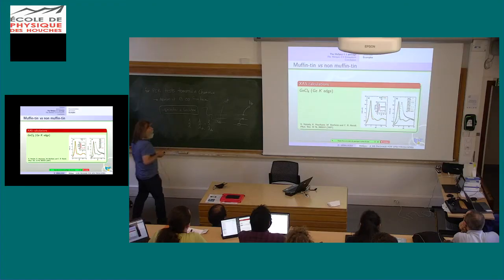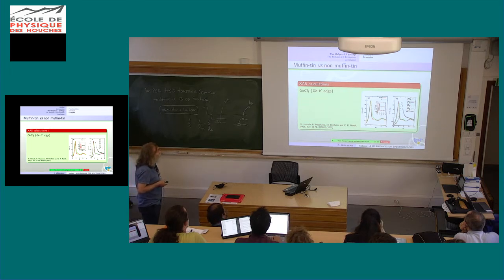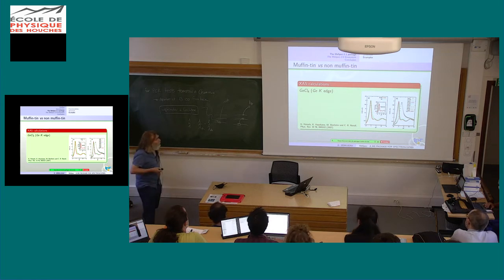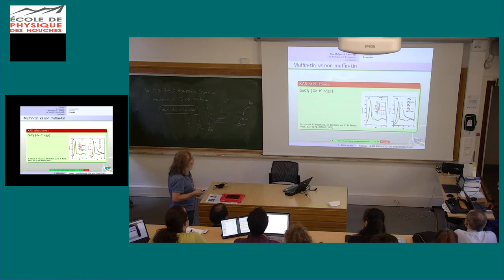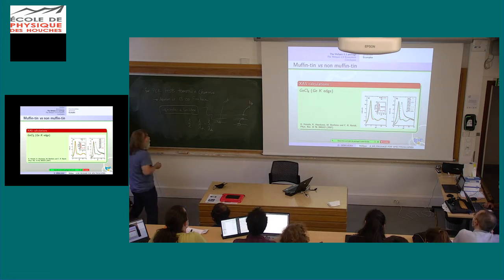Now I come to full potential photoelectron diffraction. It's not implemented in the standard code but it's available if you are interested. So far there have been two or three calculations done. Coming back to results shown by Keiske Hatada — on the K-edge X-ray absorption K-edge of GeCl4. As he showed, if you just do a muffin-tin calculation you cannot correctly match the two bumps here — there is one missing. This is the green line, and you need full potential to do this.